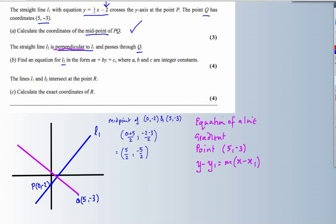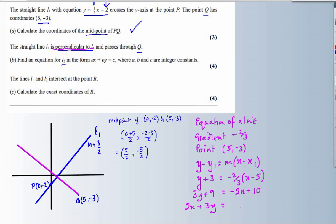My gradient relies on the fact that I'm perpendicular to L1. Now L1 has a gradient of 3/2, which means the gradient of my perpendicular line is opposite in sense — so plus to minus — and 3/2 becomes -2/3. And as soon as I know that, that's y minus (-3) equals the gradient times (x minus 5). If I multiply by 3 and expand the brackets, I get 2x + 3y - 9 = 1. There's my equation — this is L2.